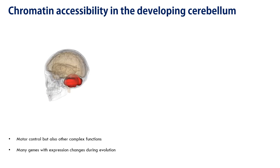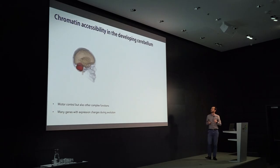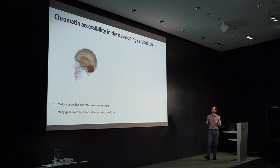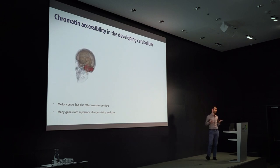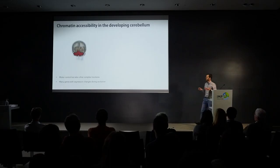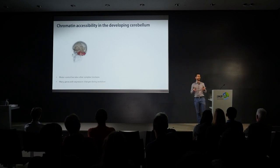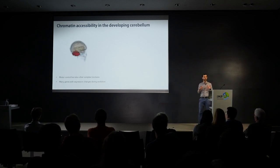In the lab, we decided to use this method to study the chromatin accessibility profiles of single cells during the development of the cerebellum. The cerebellum is the region in the back of our brain primarily known to be associated with motor control, but which is actually involved in other complex functions as well. In our previous work, we found many genes that show radical expression changes during development, suggesting this is a region underappreciated in terms of brain evolution.